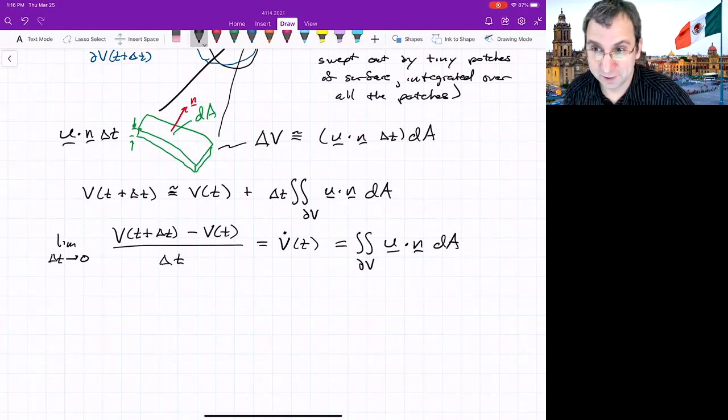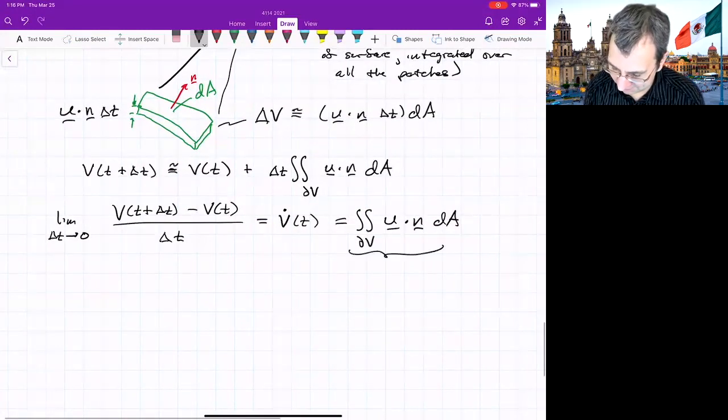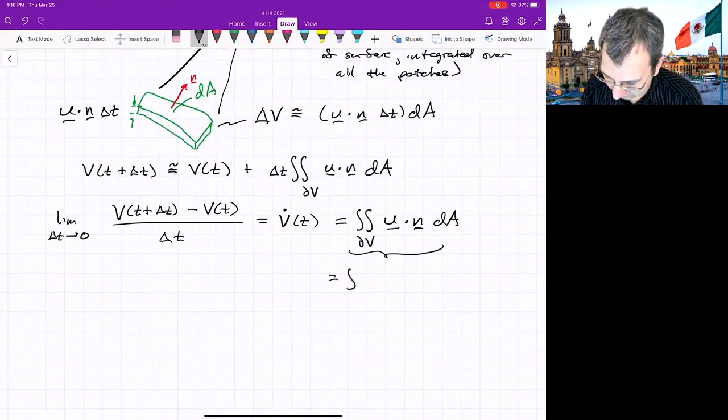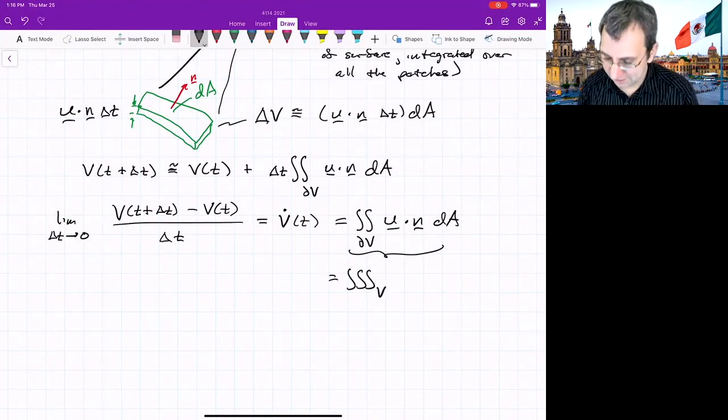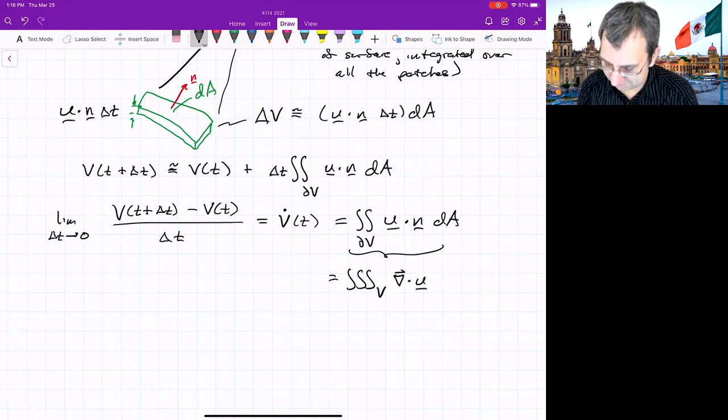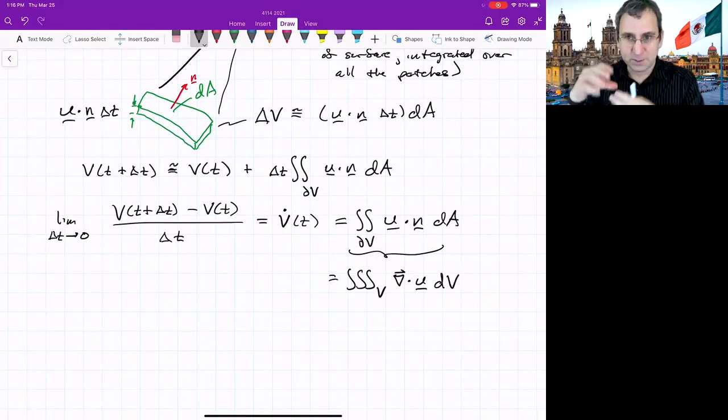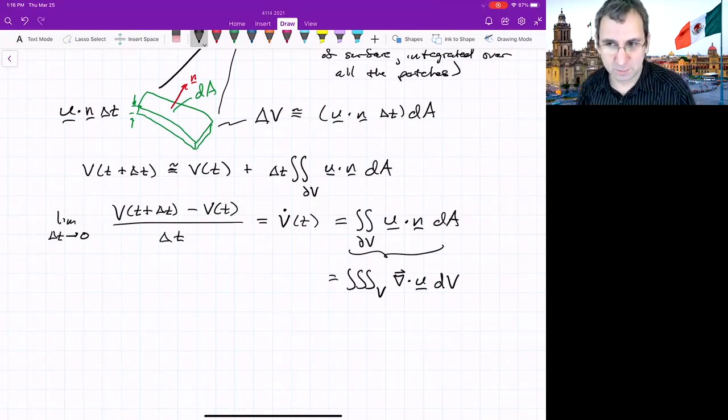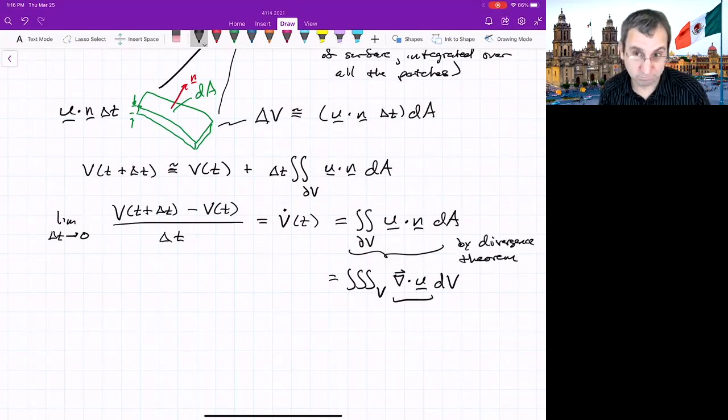So we know that this is equal to the triple integral over the volume of the divergence of the velocity field. And now we're integrating over the entire volume, so little dv, little cubes of volume everywhere, rather than little patches of surface. So this is by the divergence theorem. So you notice we get the divergence. So we use the divergence when we talked about Hamiltonian systems, but we were looking at just divergence in 2D. Now we've got divergence in 3D for a system that we don't even know if it has any kind of structure.